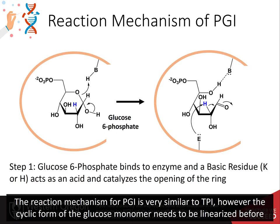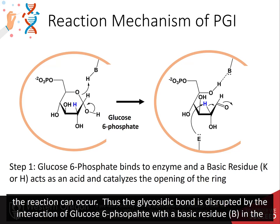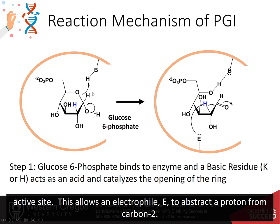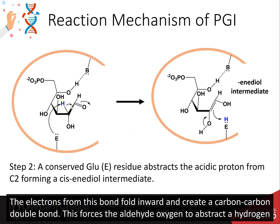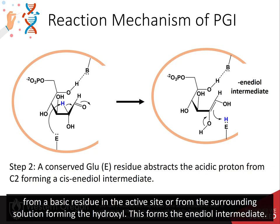The reaction mechanism for phosphoglucose isomerase is very similar to triose phosphate isomerase. However, the cyclic form of the glucose monomer needs to be linearized before the reaction can occur. Thus, the glycosidic bond is disrupted by the interaction of glucose 6-phosphate with a basic residue in the active site. This allows the electrophile to abstract a proton from carbon-2. The electrons from this bond fold inward, creating a carbon-carbon double bond, which forces the aldehyde oxygen to abstract a hydrogen from a basic residue in the active site or from the surrounding solution, forming the hydroxyl. This forms the enediol intermediate.